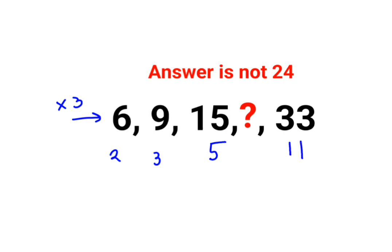So we have 33 which when divided by 3 gets you 11. So basically 6 is a multiple of 2, 9 is a multiple of 3, 15 is a multiple of 5, 33 is a multiple of 11, and all of these are multiples of 3.